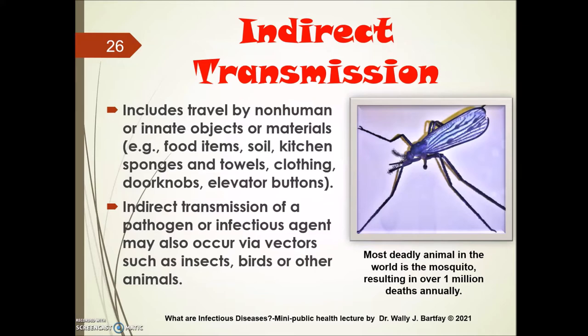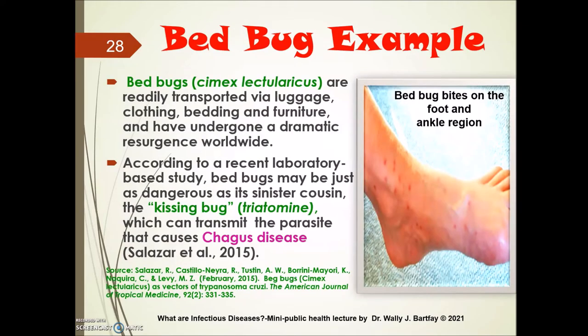In fact, the mosquito is the most deadly animal in the world — not the great white shark or a poisonous cobra — because the mosquito kills over one million people every single year from a host of different diseases. Bed bugs are another example; they are readily transmitted in people's luggage, clothing, bedding, and furniture, and have undergone a dramatic resurgence worldwide. According to a recent laboratory-based study, bed bugs may be as dangerous as the kissing bug, which can transmit the parasite that causes Chagas disease.